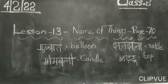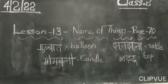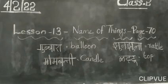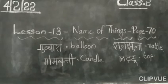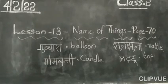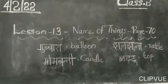In the previous class we studied the Name of Birds. Here are more birds: Peacock, Murga means Rooster, Kabuter means Pigeon, Ullu means Owl, Vag means Crane, Tota means Parrot, Hanse means Swan, Better means Duck.